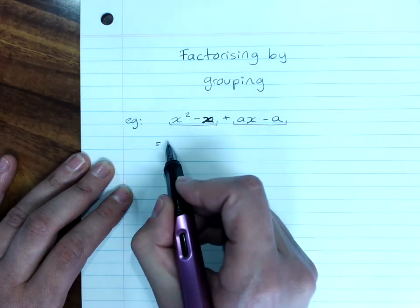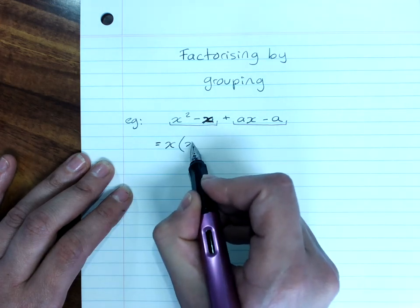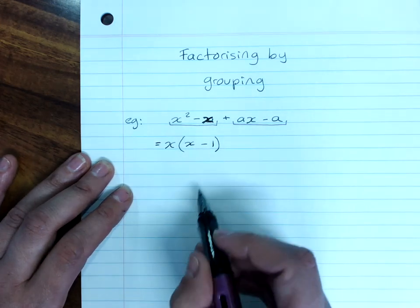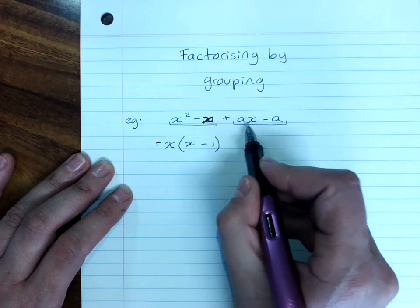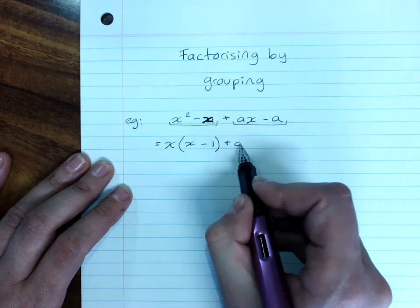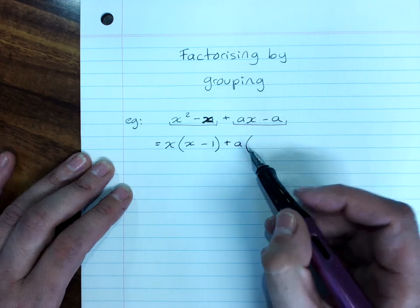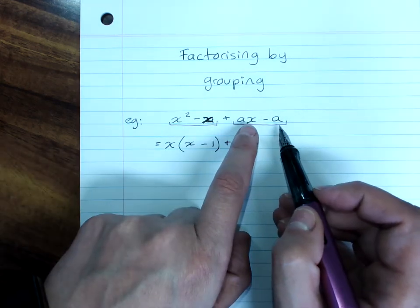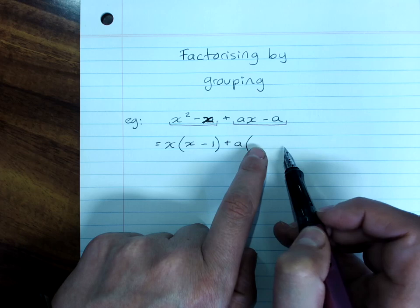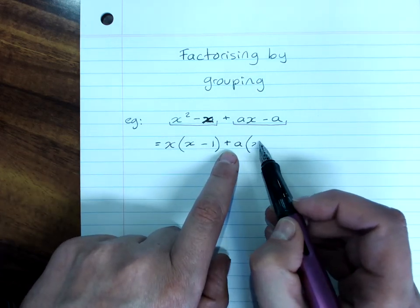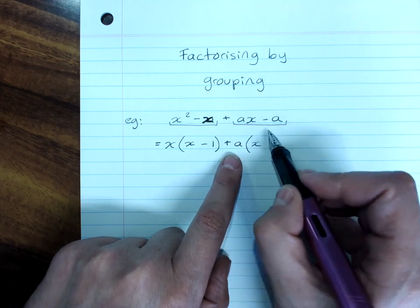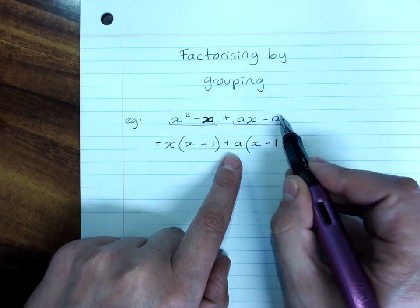HCF here is x, the remaining factors are x and minus one. Now it's a positive common factor here of a, so we write plus a outside, and here's a clue. You're aiming for the same numbers or letters in the brackets. a times x is ax, a times negative one is negative a.